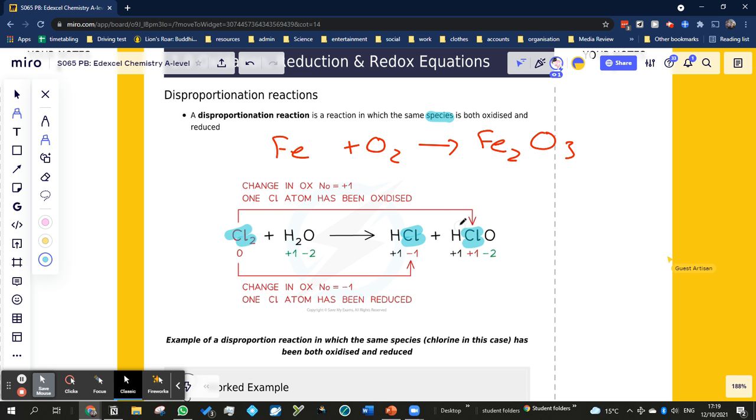So this is the only way you can ever have a disproportionation reaction - if the thing that is being oxidized and reduced has been split into two different products, and in one case it's been oxidized and in one case it's been reduced. That's the crux, that's the main thing about disproportionation reactions.